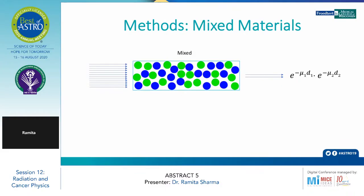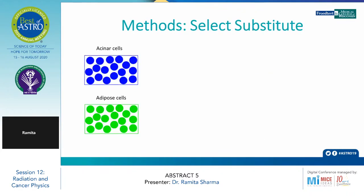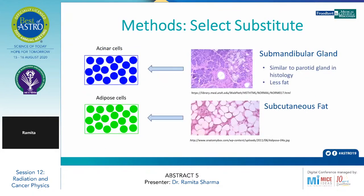The HU and the volume of these contours — what they have taken: they have taken diagnostic CT quality data daily during CT-guided radiotherapy, and daily they have drawn the contour of the parotid glands, submandibular glands, and the subcutaneous fat. The Hounsfield units and the volume of these contours were used to calculate the effective volume of the parotid glands with two assumptions. The first assumption was that the HU of the acinar cells in the parotid glands can be substituted with that of the submandibular glands, which are less fatty, and the HU of the adipose cells can be substituted with the subcutaneous fat.